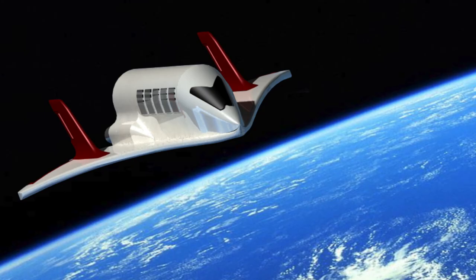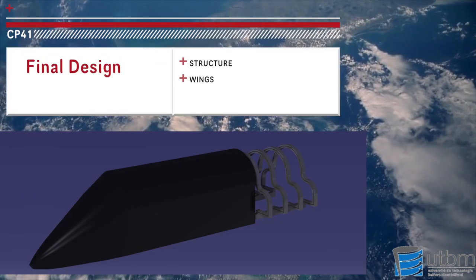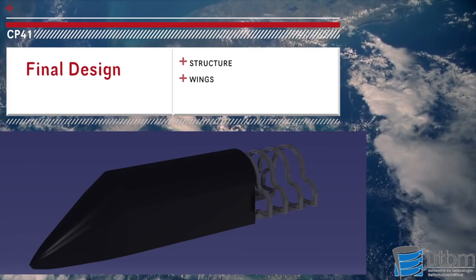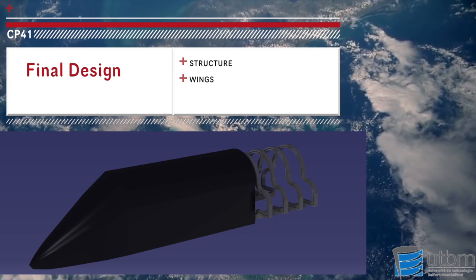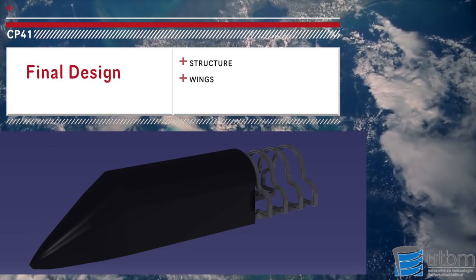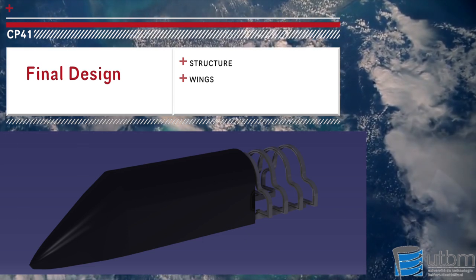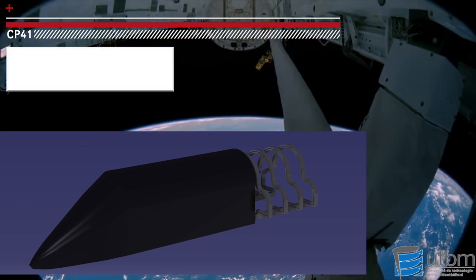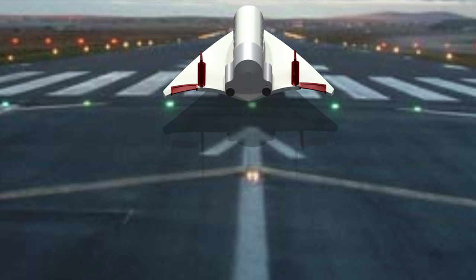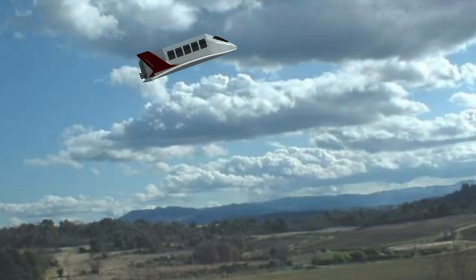Firstly, for our structure we chose to make a monocoque structure which is made of carbon and insulation with aluminum beams near the spatial propulsor. In fact, this structure is light and resistant. This structure can contain eight visitors and also the two pilots of the spaceship.